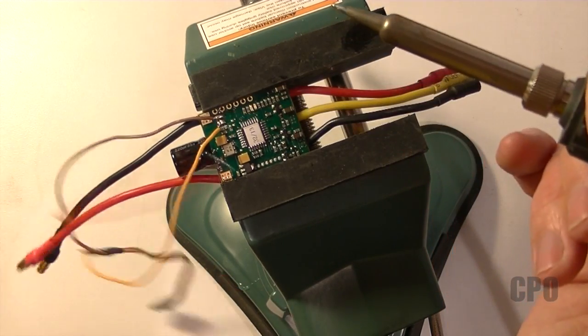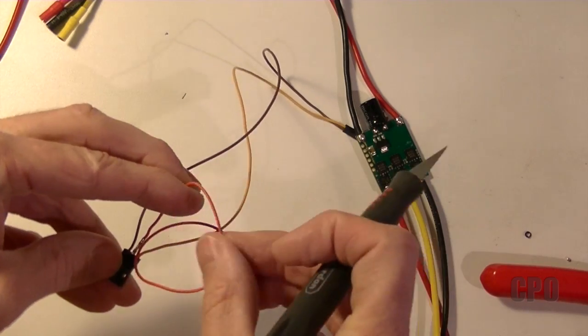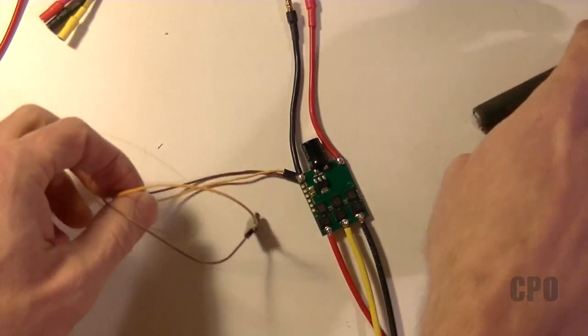So I'm desoldering that red wire from the board and then I'll also remove it from the other end in the connector.